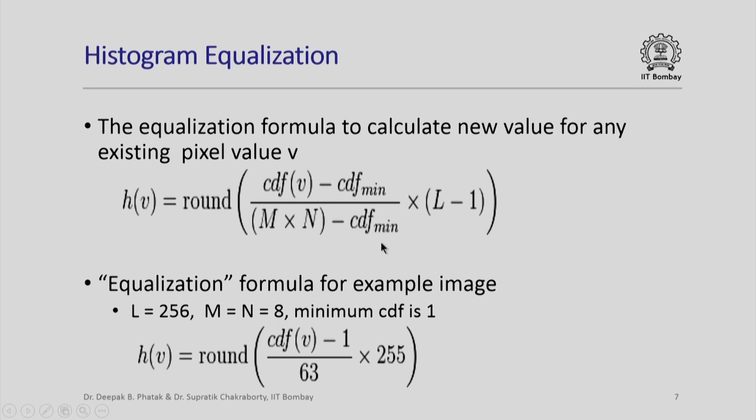It is useful but not essential to understand how these formulae have come. We only note that once we calculate the histogram and the cumulative distribution function, we simply have to apply this formula to get a new value for any image pixel value that exists in the current image.